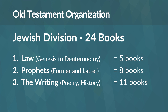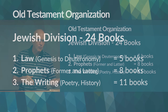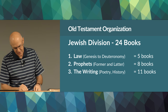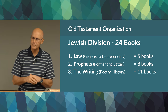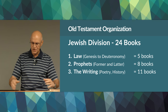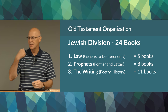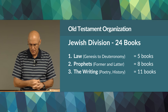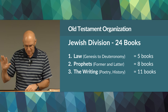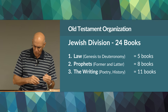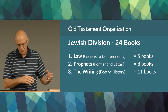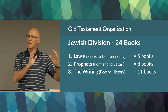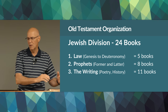The third section was the Holy Writings — poetry and history: Job, Psalms, Proverbs, Esther, Nehemiah, Daniel. The Jews organized these into 24 books: five from the Pentateuch, four former prophets, four latter prophets, and eleven writings — for a total of 24 books. That was how the Hebrew Bible was divided.